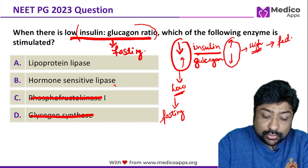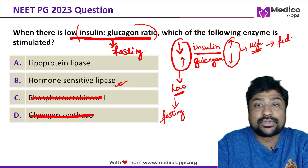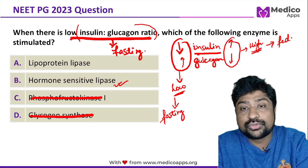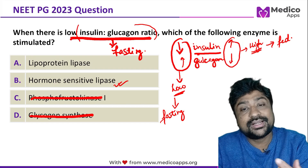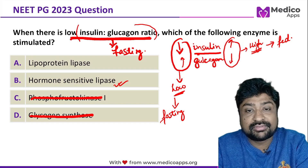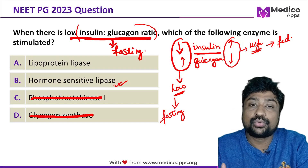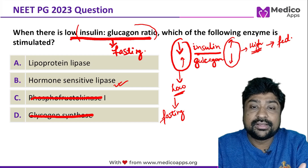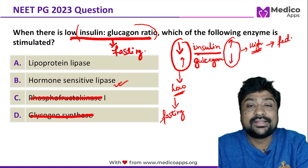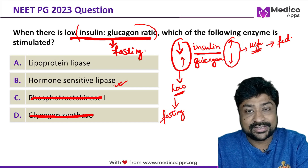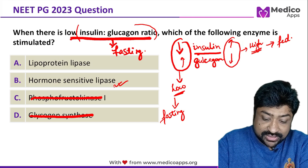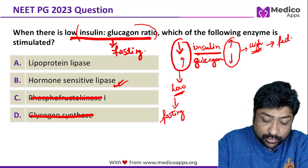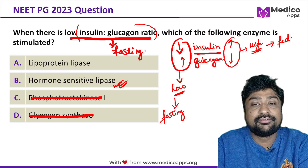So the answer could be hormone sensitive lipase. Glucagon stimulates hormone sensitive lipase, and what it does is break stored fat into free fatty acids and glycerol, which become available for metabolism. So hormone sensitive lipase is definitely going to be stimulated in the fasting state.